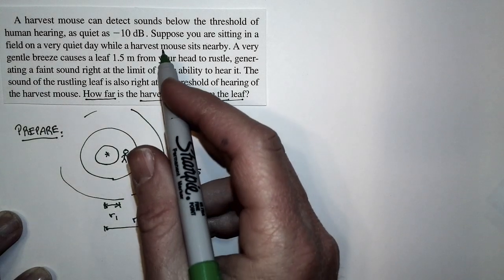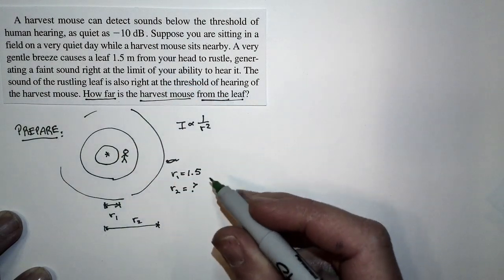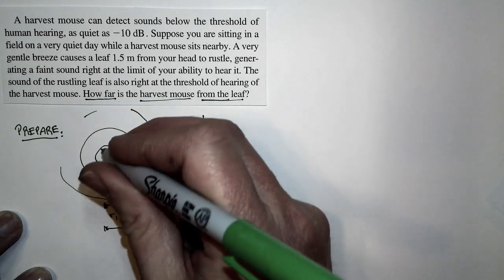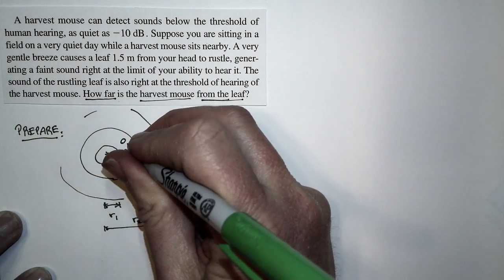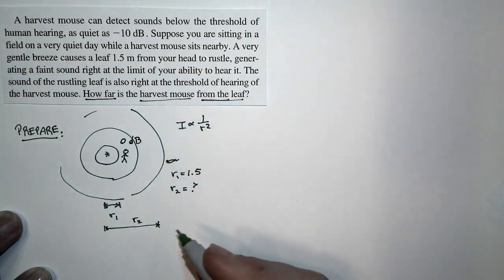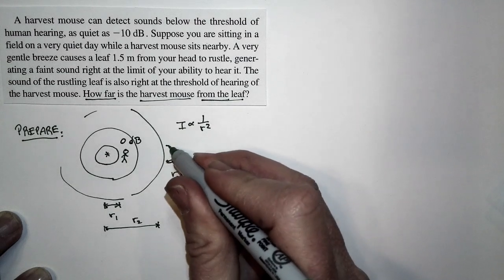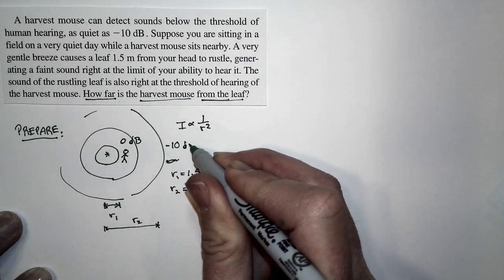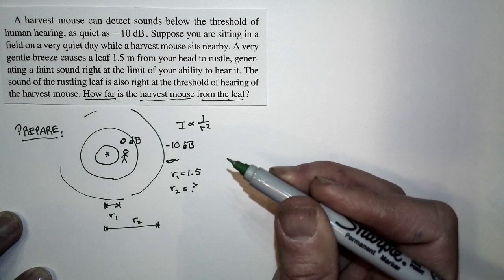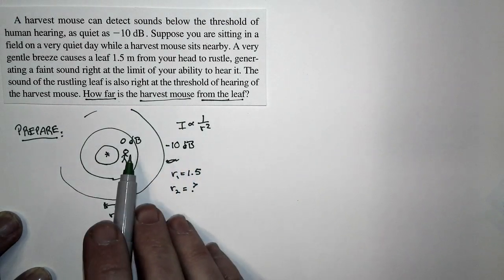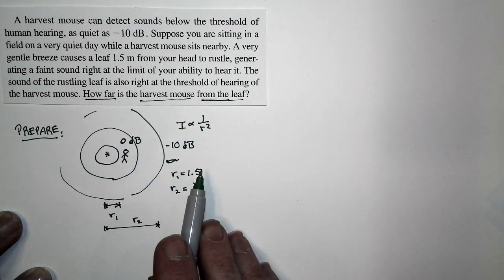Your smallest sensitivity corresponds to zero decibels — that's the smallest sound you're sensitive to, and that's the definition of zero decibels. But the harvest mouse can go down to negative 10 decibels, so it's more sensitive to sound than you are. This is the thing that relates those two.